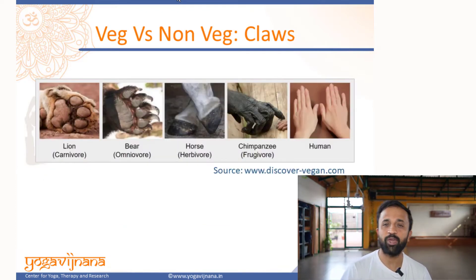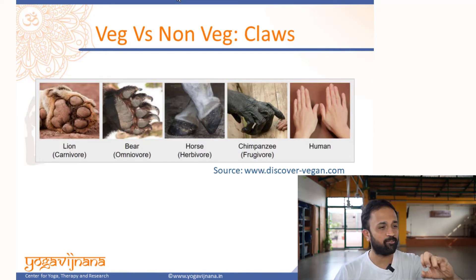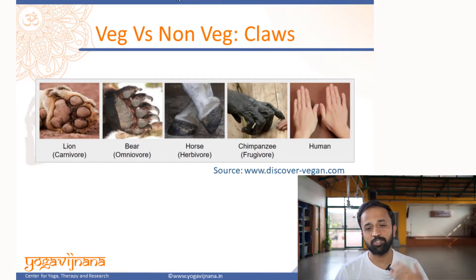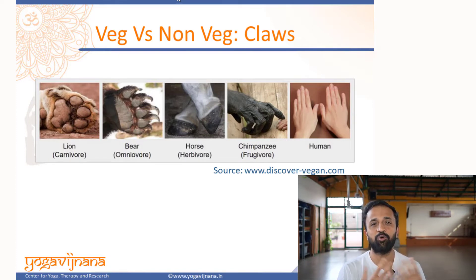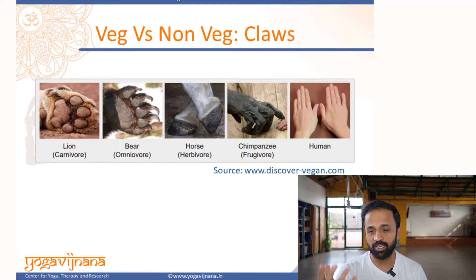If you look at claws — which is essentially the nails — the way they are designed: carnivores need to go and catch prey, so they have very long, sharp, and pointed nails — we call them claws — which can shred the meat. But when it comes to frugivores, we do not need to go and kill something. Anatomically, we have very short nails because all we have to do is probably remove the peel of a fruit, which is manageable with the kind of nails that we have.